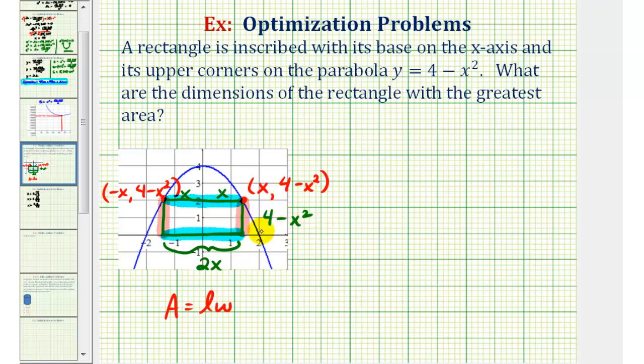Therefore the area of this rectangle in terms of x would be equal to 2x times the quantity 4 minus x squared, using the formula length times width.